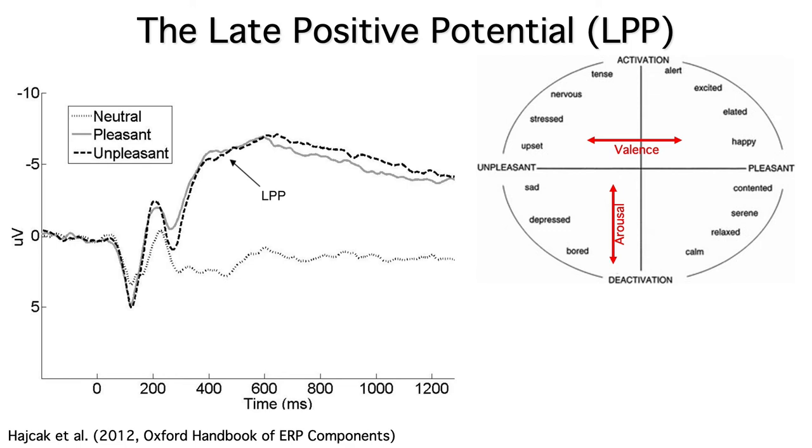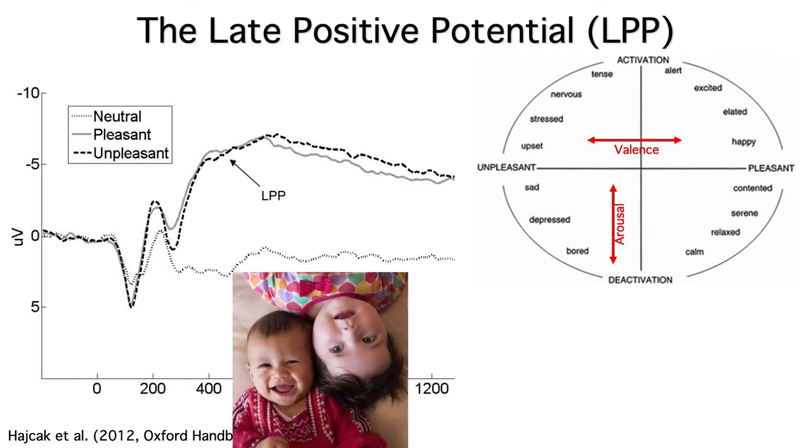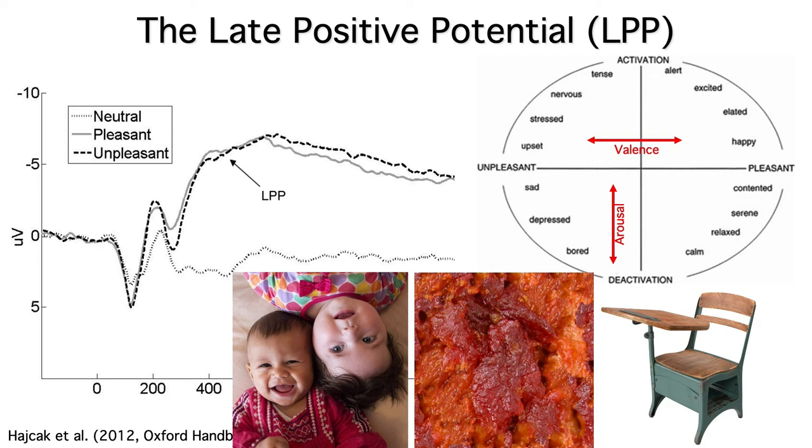In this study, people looked at pleasant pictures like babies laughing, unpleasant pictures like rotting meat, and neutral pictures like desks. Both the pleasant and unpleasant pictures were high in arousal, so both elicited a large LPP.